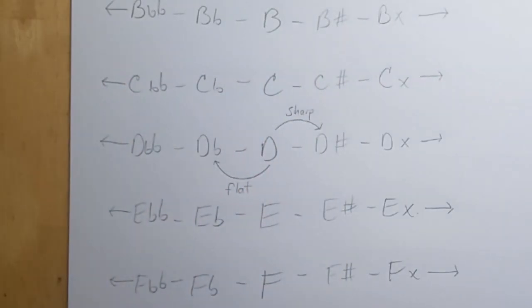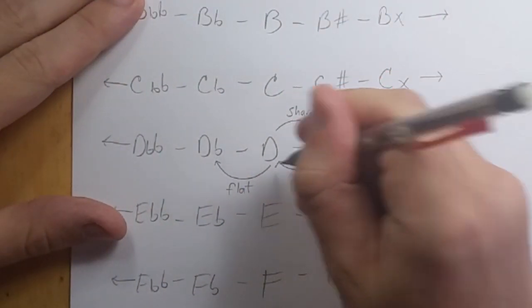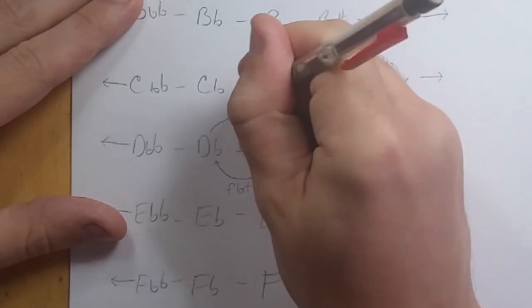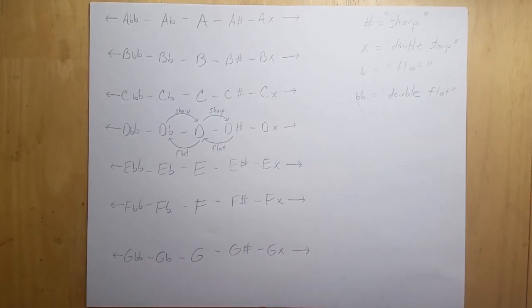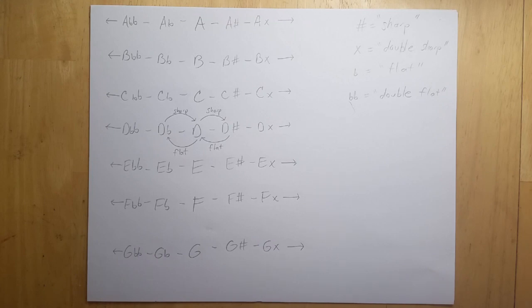We might also say, technically, that D-natural is a flat version of D-sharp, and a sharp version of D-flat. There is practical merit to such a naming system, since notes with the same letter name, especially those closest to each other in the circle of fifths, seem to be inherently interchangeable with one another to some degree. We might say that those notes have similar functions.